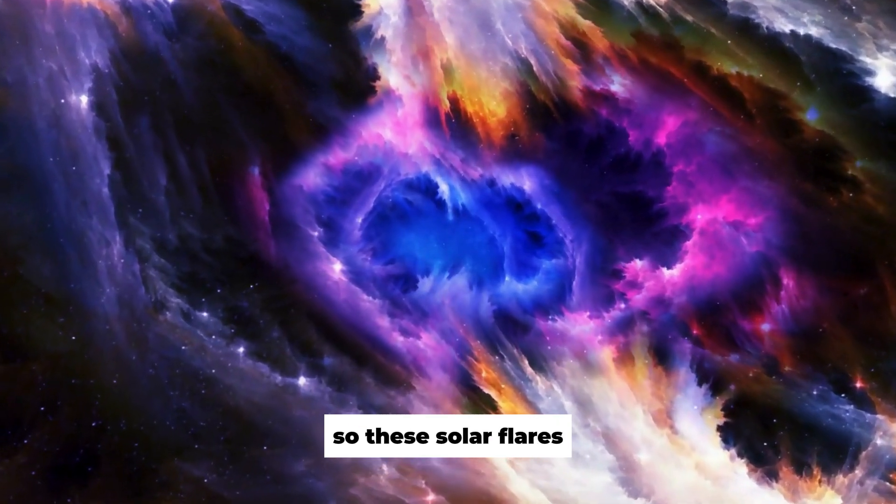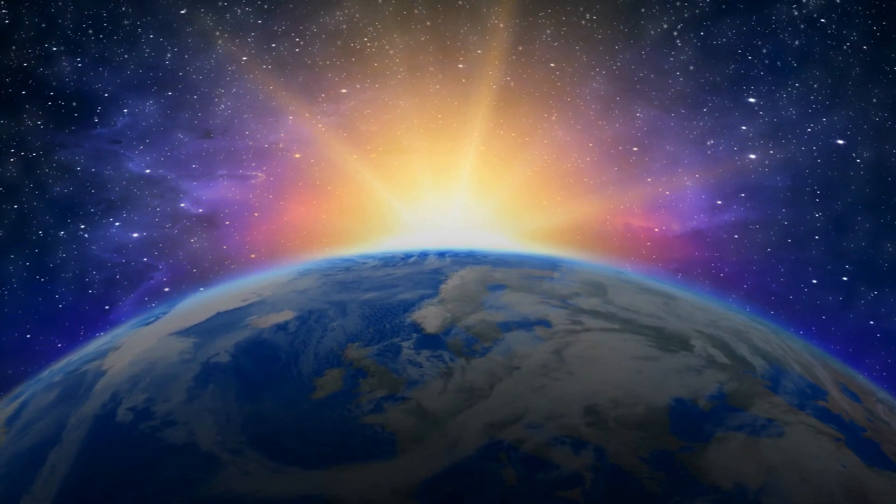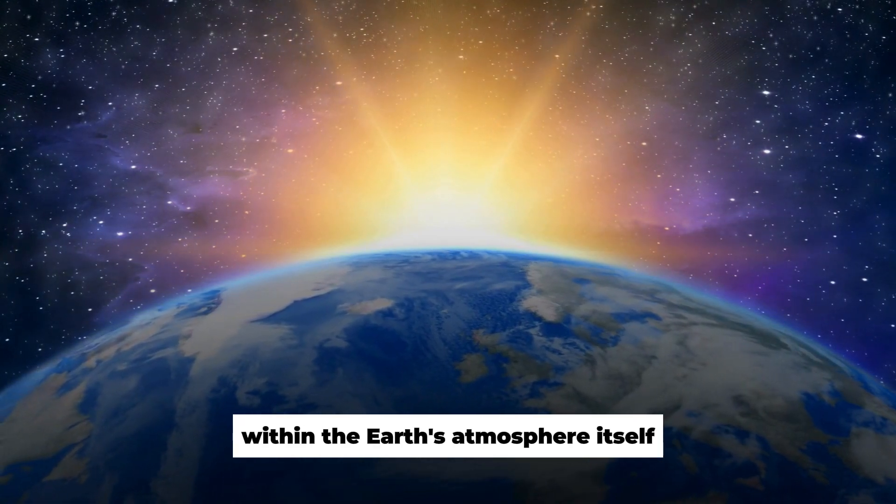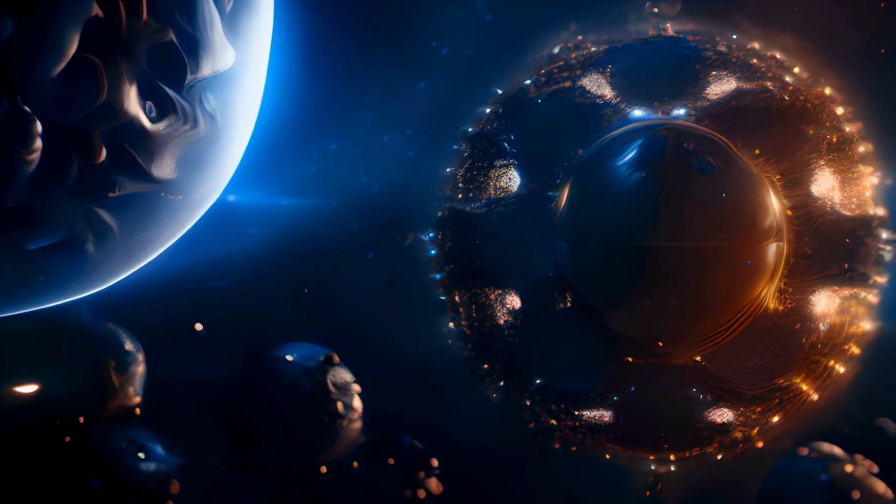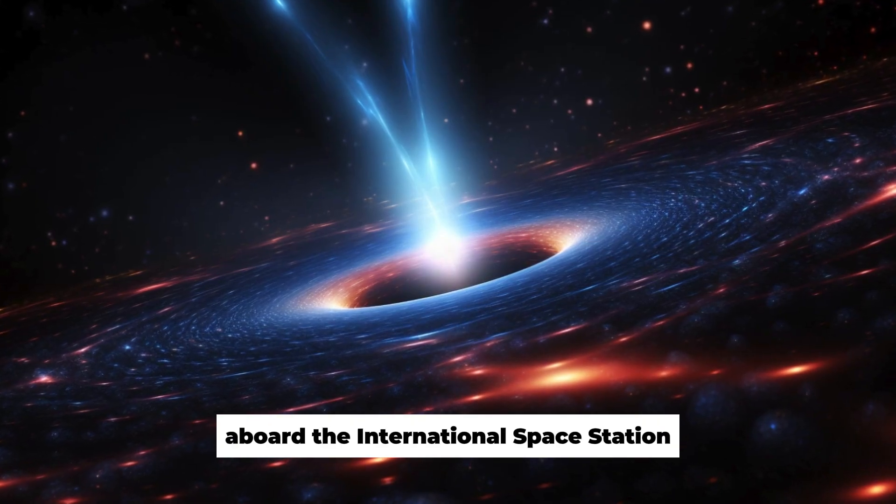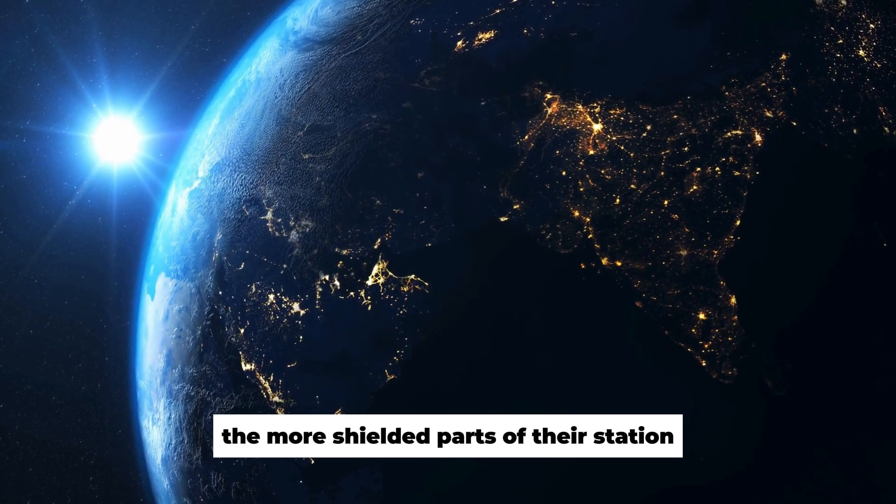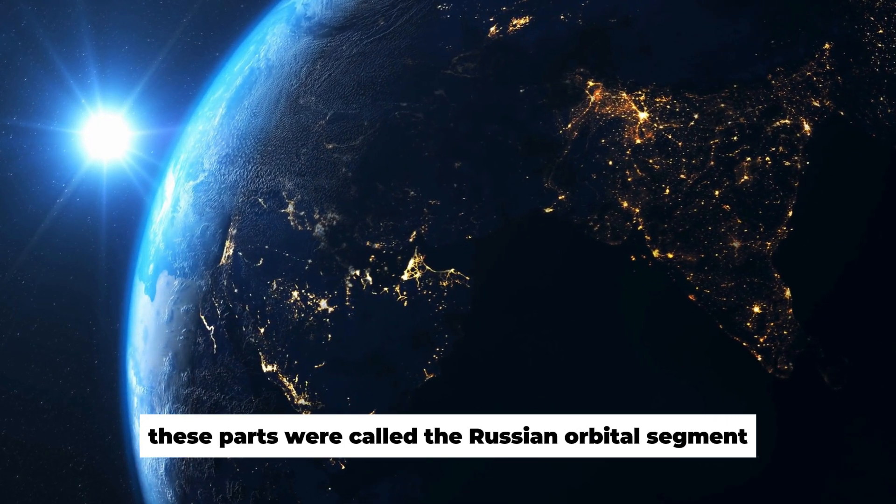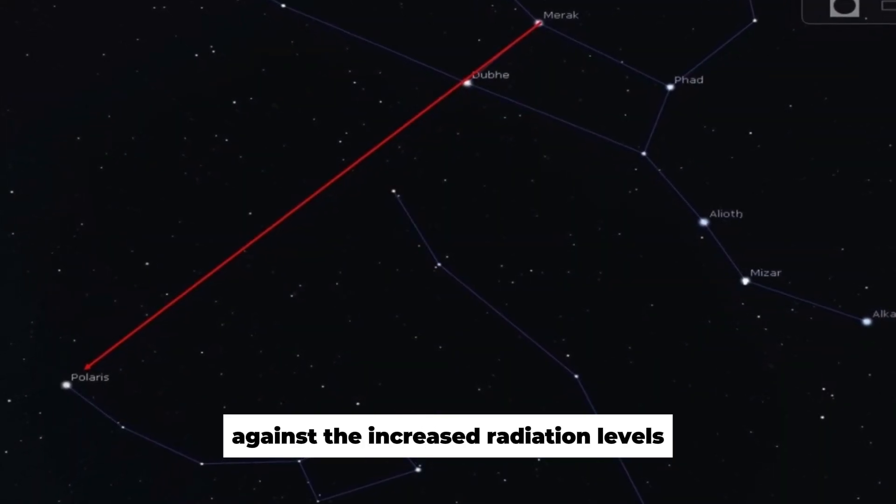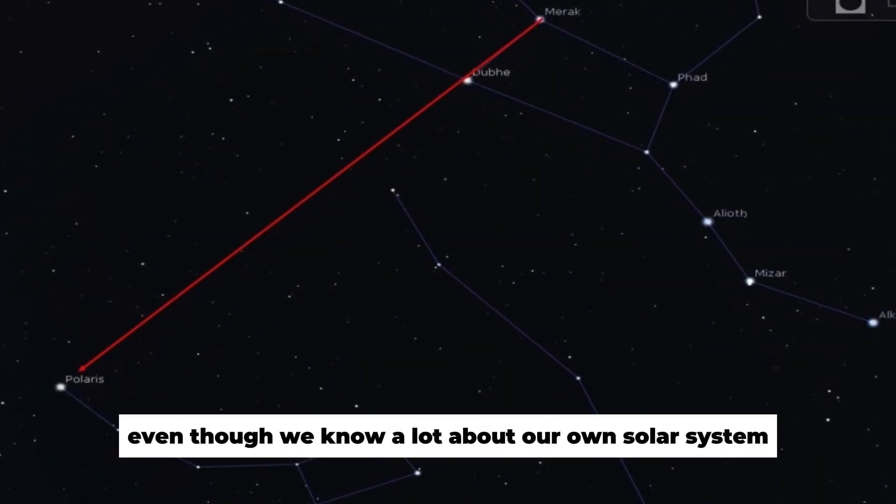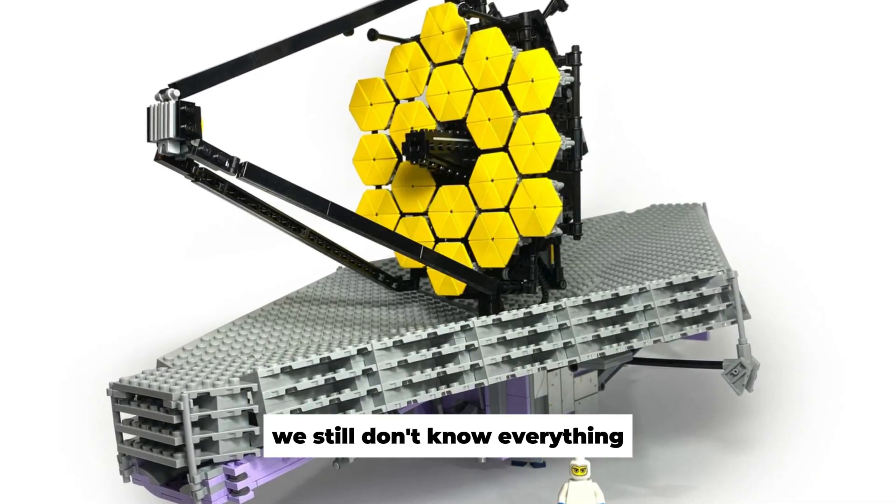So, these solar flares basically have the ability to cut out the power for an entire city. They do this by creating electrical currents within the Earth's atmosphere itself, especially in the magnetosphere and the ionosphere. The astronauts who were in space aboard the International Space Station were advised to stay in the more shielded parts of their station. These parts were called the Russian orbital segment, and they were asked to wear protective gear so that they are safe against the increased radiation levels. Now, even though we know a lot about our own solar system and how these solar flares work, we still don't know everything.